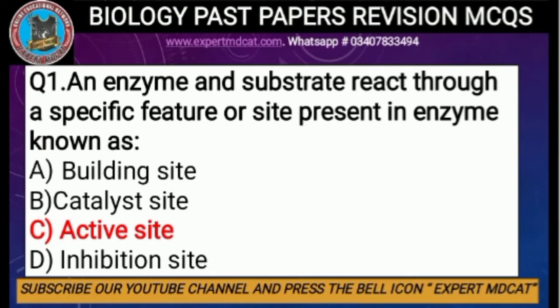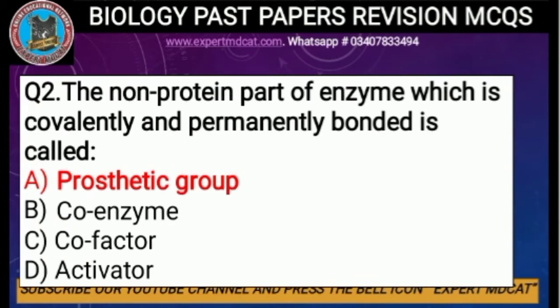Question number two: the non-protein part of an enzyme which is covalently and permanently bonded is called. Many enzymes are made of protein, but some have non-protein parts attached. If the non-protein part is covalently and permanently — meaning tightly bonded — to the enzyme, we call it the prosthetic group. The coenzyme is also a non-protein part but it is loosely bonded and mostly derived from vitamins. The co-factor is also a non-protein part. The correct option is A, prosthetic group.